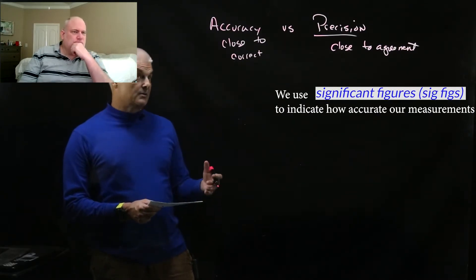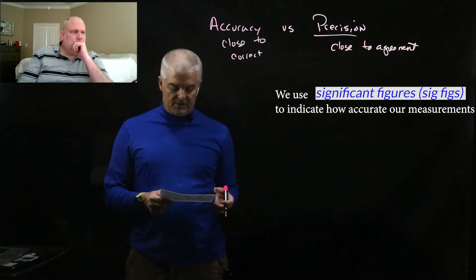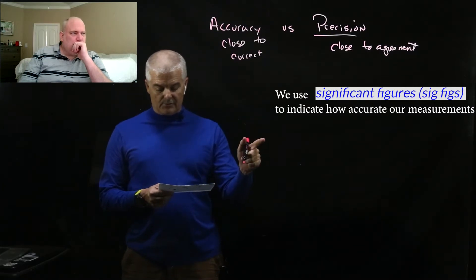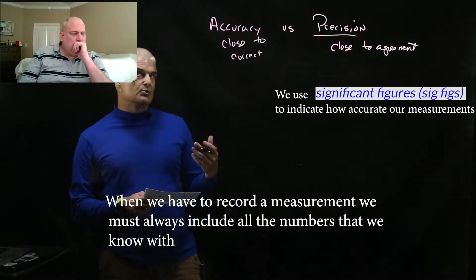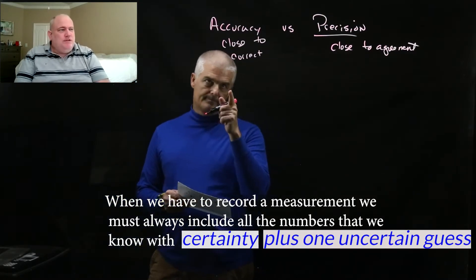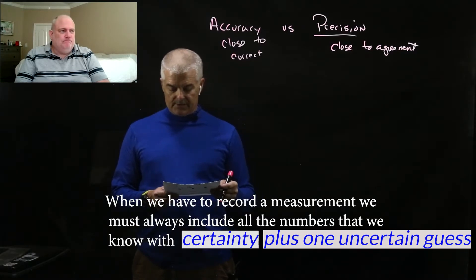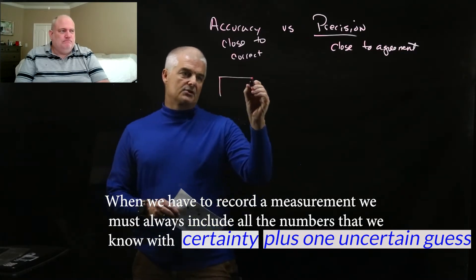So Mr. D, what's up with this statement here? We use what? Significant figures. Significant figures, all right. Sig figs is the term we'll use for shorthand to indicate that our measurements are accurate, right. So when we have to record a measurement, we must always include the numbers that we know with certainty plus one uncertain guess. Okay, certainty plus one uncertain guess.